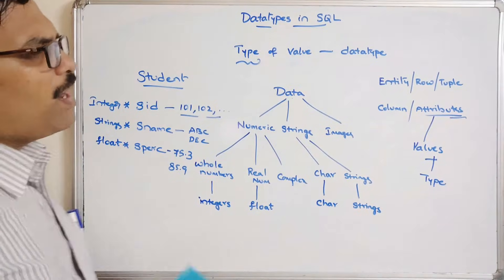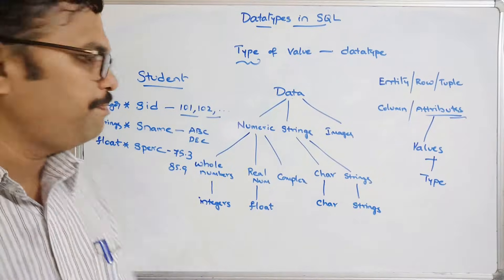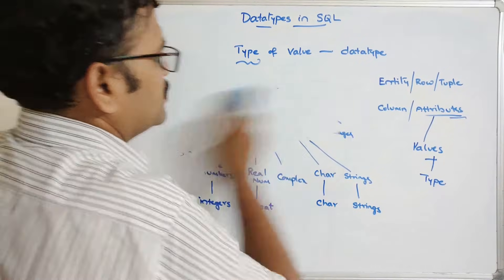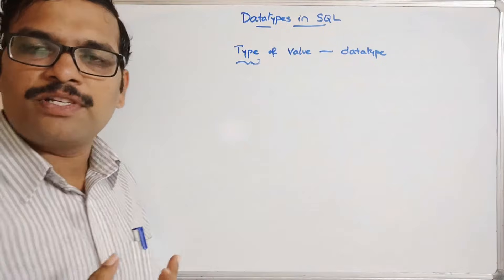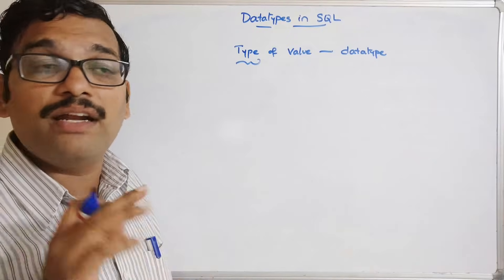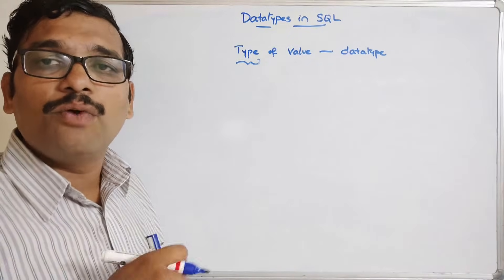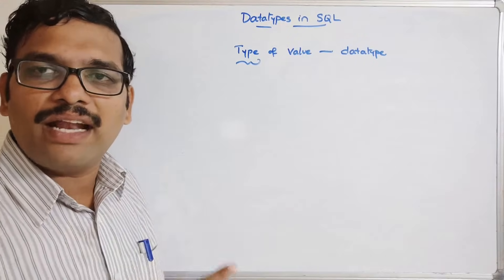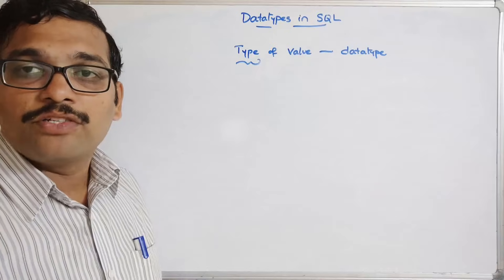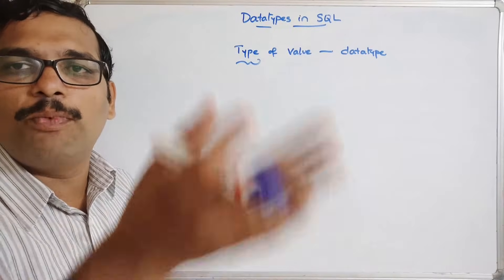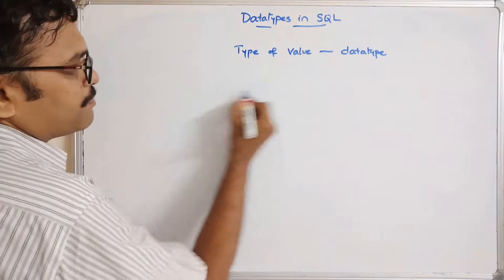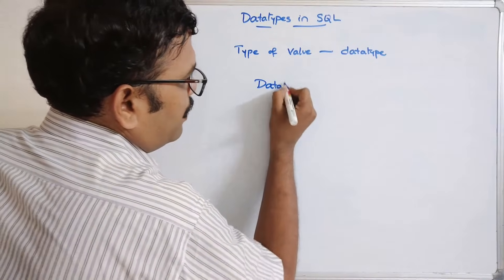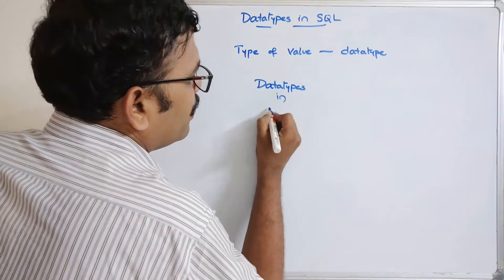Now, what are the different data types supported in SQL? Similar to programming language concepts, here also we use attributes, and while creating the table itself we have to define each attribute with its corresponding data type — the type of value being stored in that attribute.